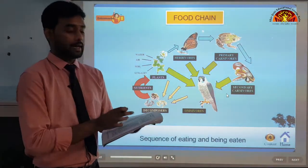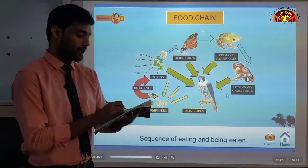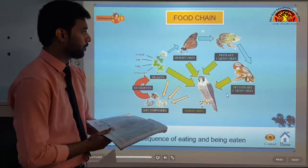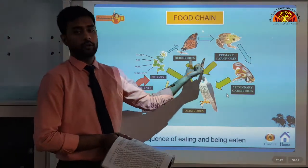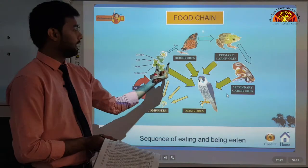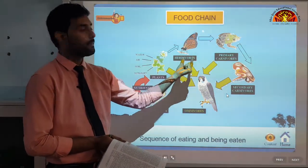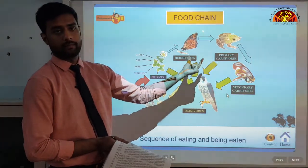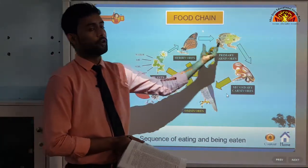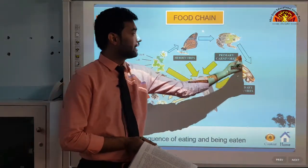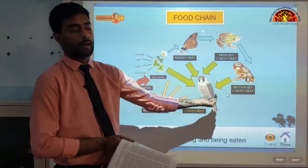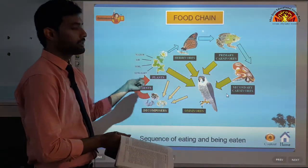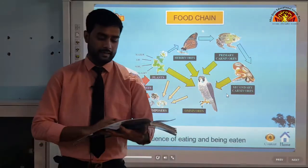When a herbivore feasts on a producer, it converts part of it into energy. That energy is transferred to the carnivore that eats it, and so on through each level, until it reaches the decomposer, which passes the energy back into the soil as nutrients.